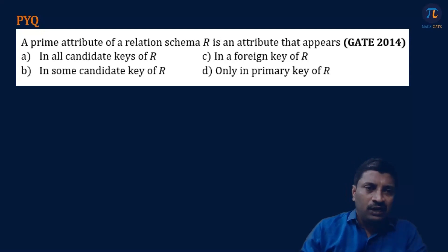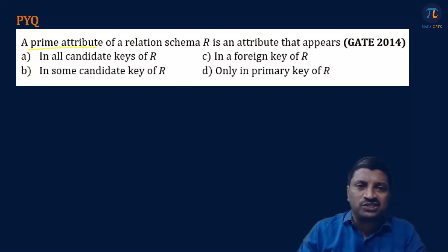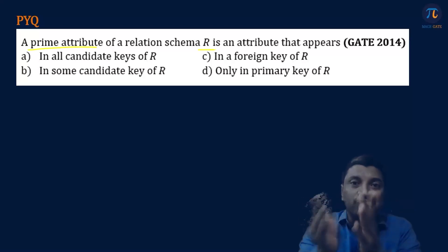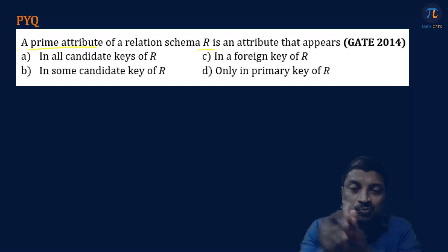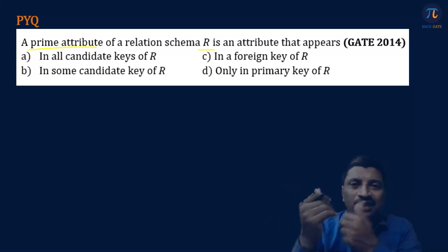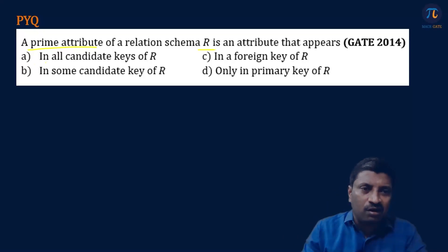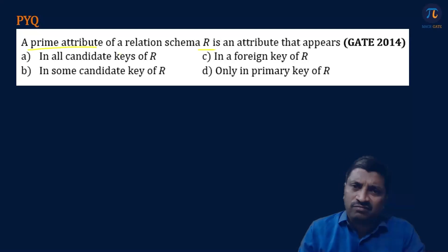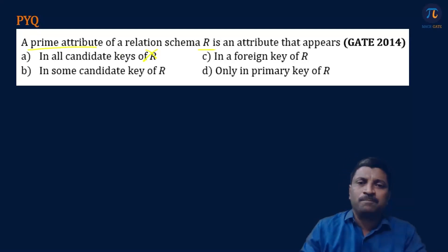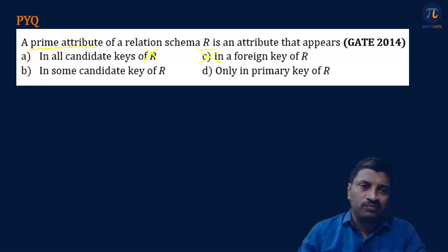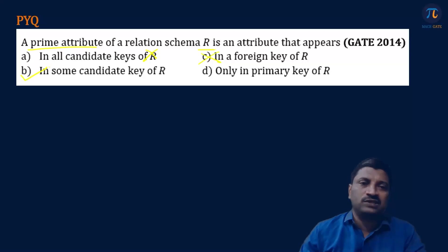Let us solve a previous exam question: a prime attribute of a relation schema R is an attribute that appears in which candidate keys? Some people confuse that a prime attribute must be present in the primary key — that is incorrect. A prime attribute can be present in any one of the candidate keys. Option A says 'in all candidate keys' — that is wrong, present in one candidate key is enough. The correct answer is 'in some candidate key'.